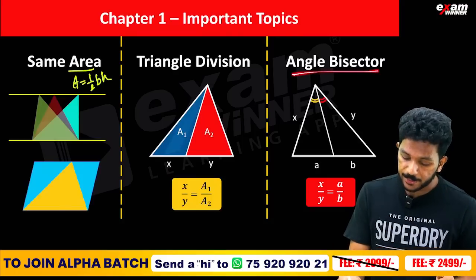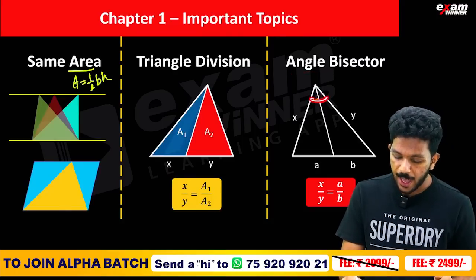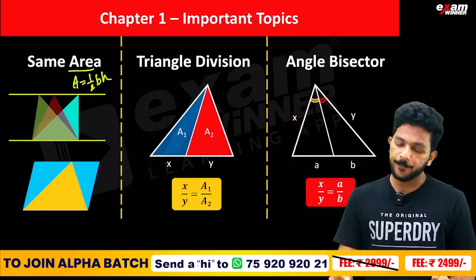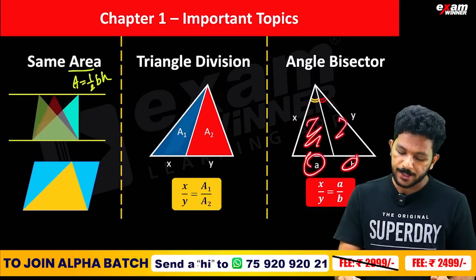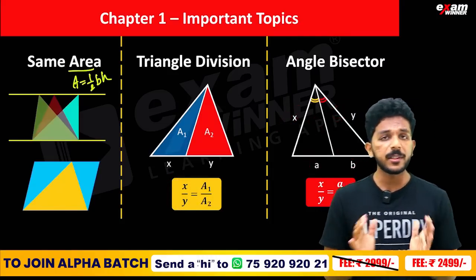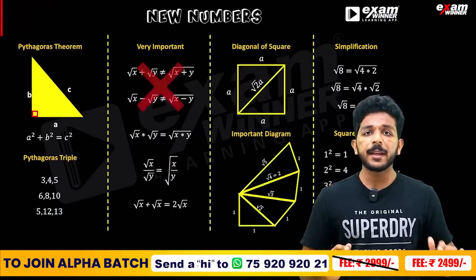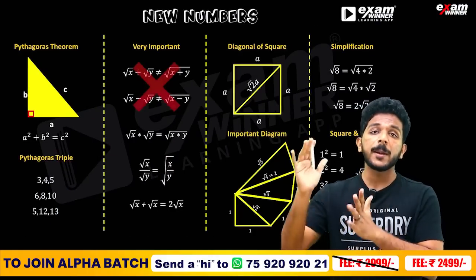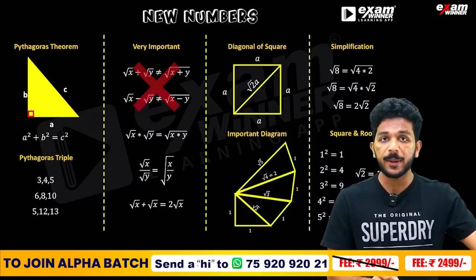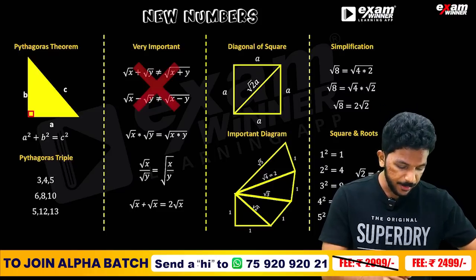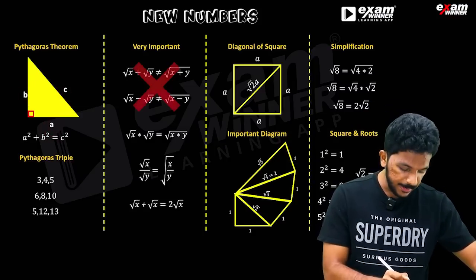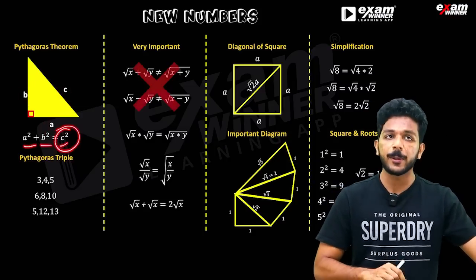The angle bisector divides the area. We divide the area using the angle bisector. We divide the first chapter. Now, Pythagoras' theorem: A² + B² = C². That's the square — A² + B² = C².